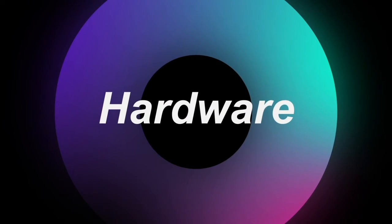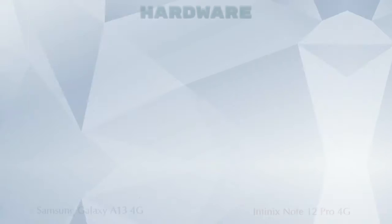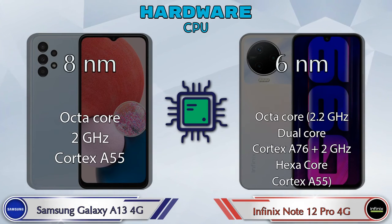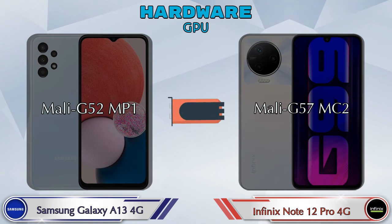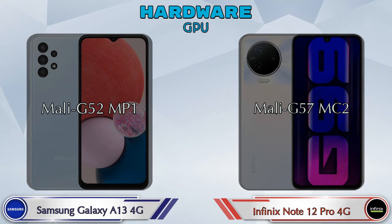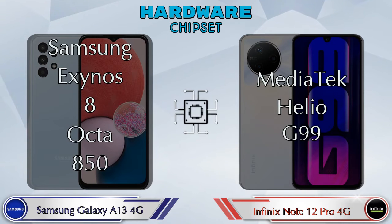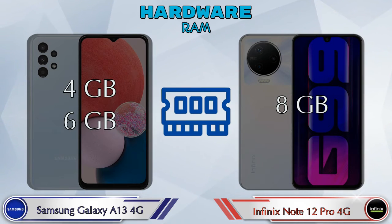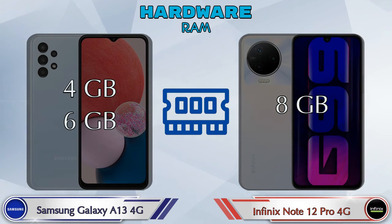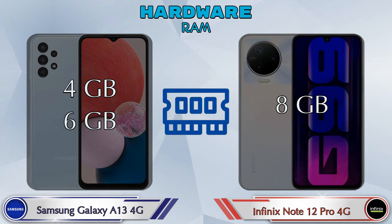First we talk about the most important part of the phone — hardware. Looking at the CPU and GPU: the Galaxy A13 4G has Mali-G52 MC1 while the Note 12 Pro 4G has Mali-G57 MC2. For chipset, the Galaxy A13 4G has Samsung Exynos 850 and the Note 12 Pro 4G has MediaTek Helio G99. For RAM, the Galaxy A13 4G has two options — 4GB and 6GB — while the Note 12 Pro 4G has only one option: 8GB RAM.